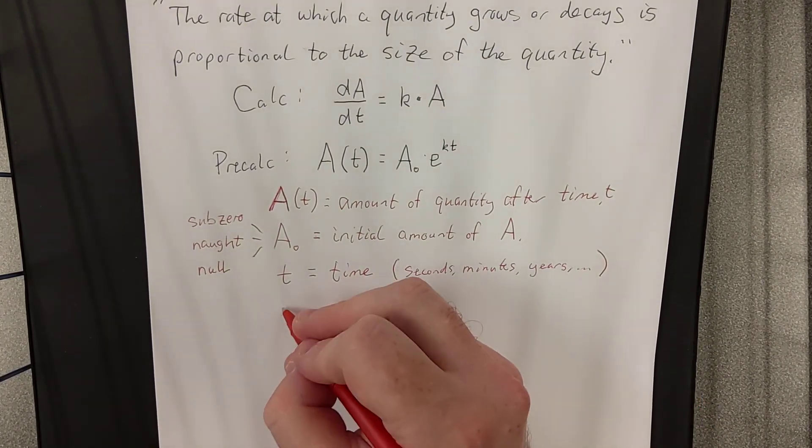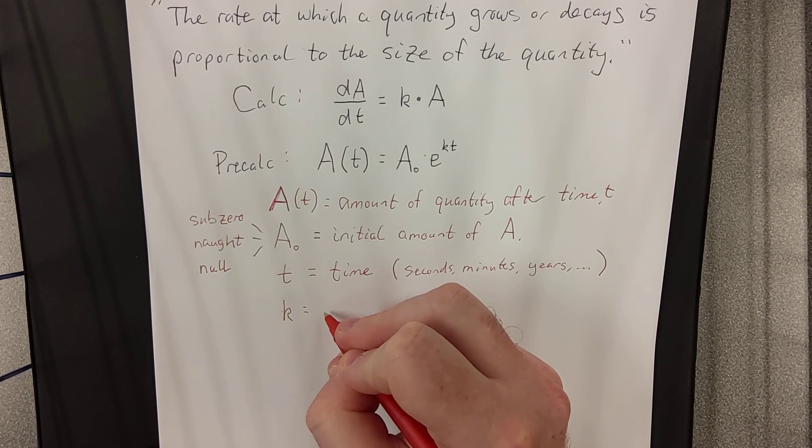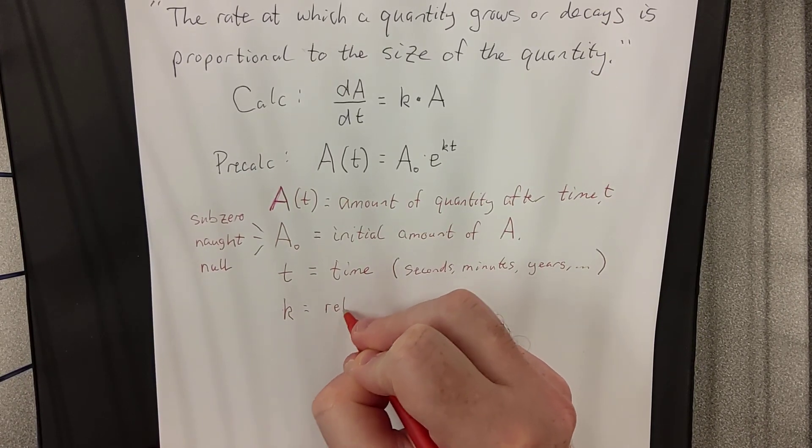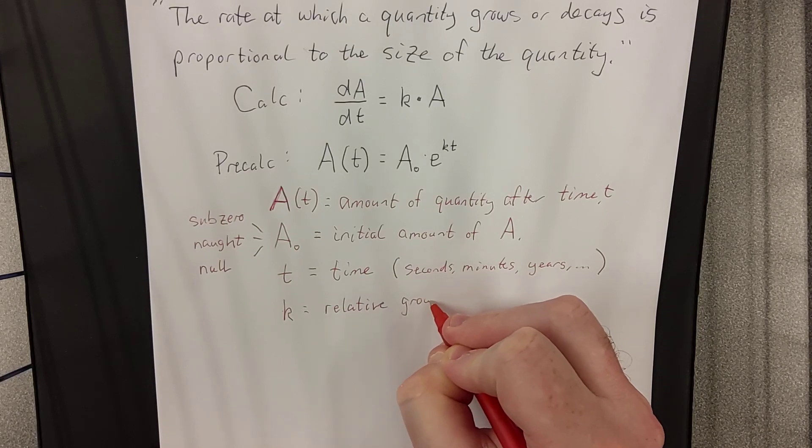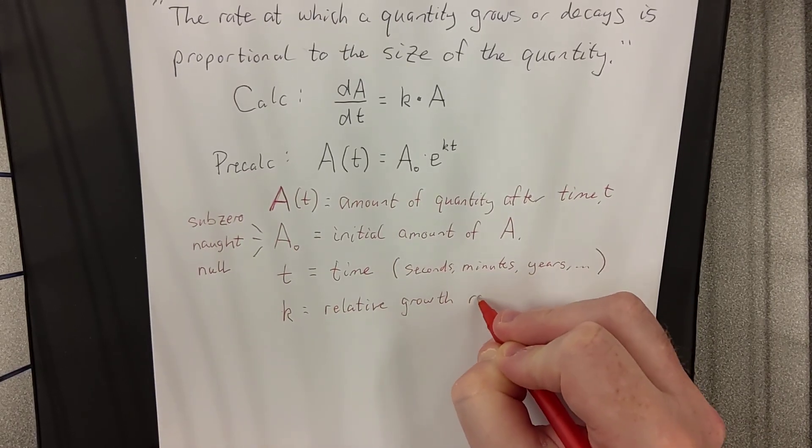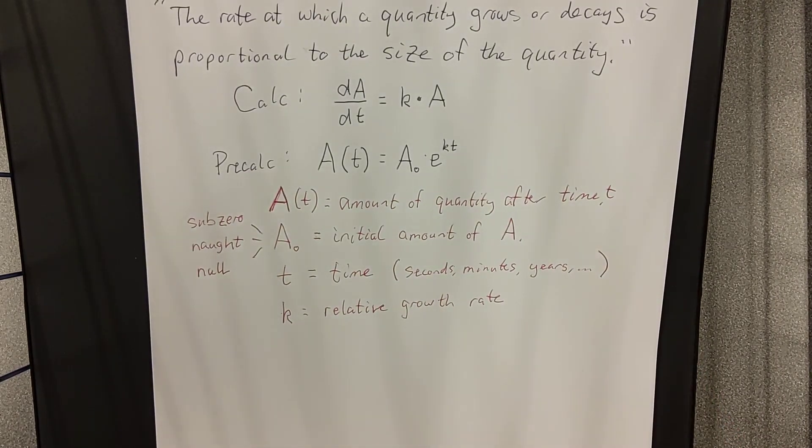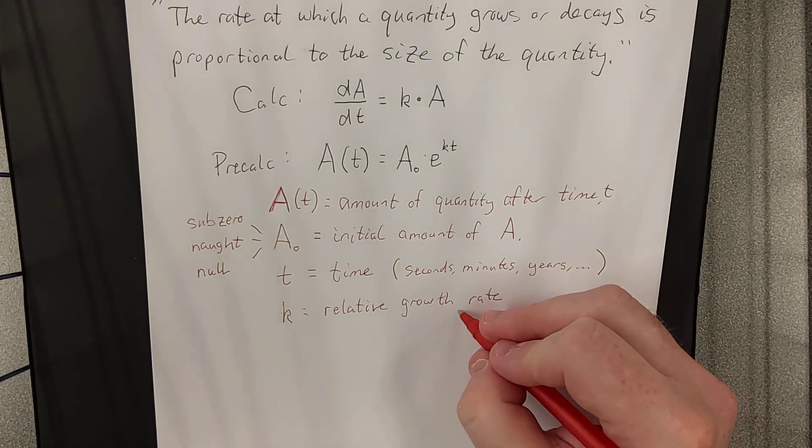And finally, we have k. K is referred to as the relative growth rate. Because our quantity, excuse me, or decay.